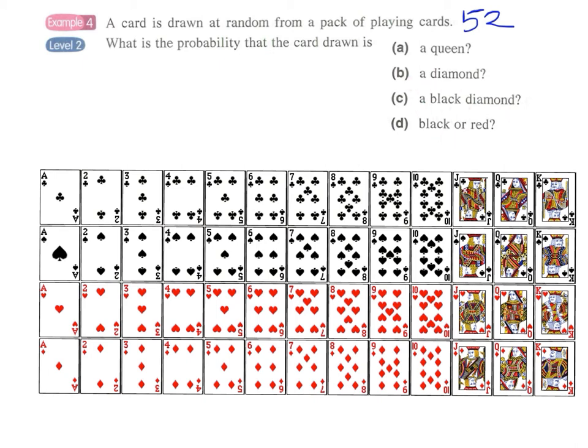And of course, the best way to do this is to show all the 52 playing cards here. And we have 4 different suits in the pack of playing cards. We have club, spade, heart and diamond.